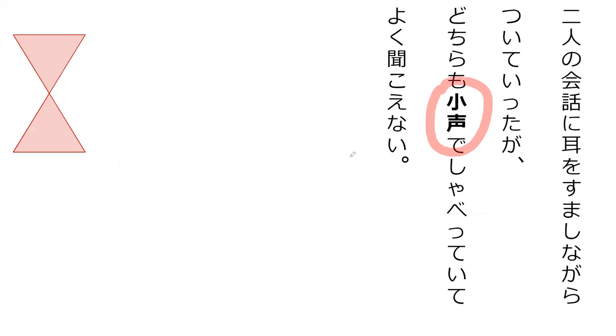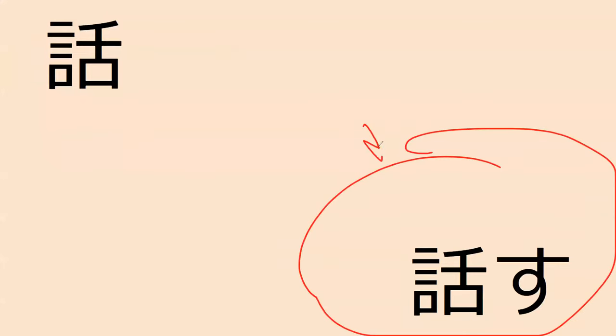Okay, do you know how to read this? Kogoe. What does kogoe mean? A small voice. Perfect. This is the opposite — ogoe, a loud voice. We saw this word. How do you read this? Hanasu. How about this one? Hanashi. Perfect. Hanashi is like 'story,' hanasu is 'to talk.'